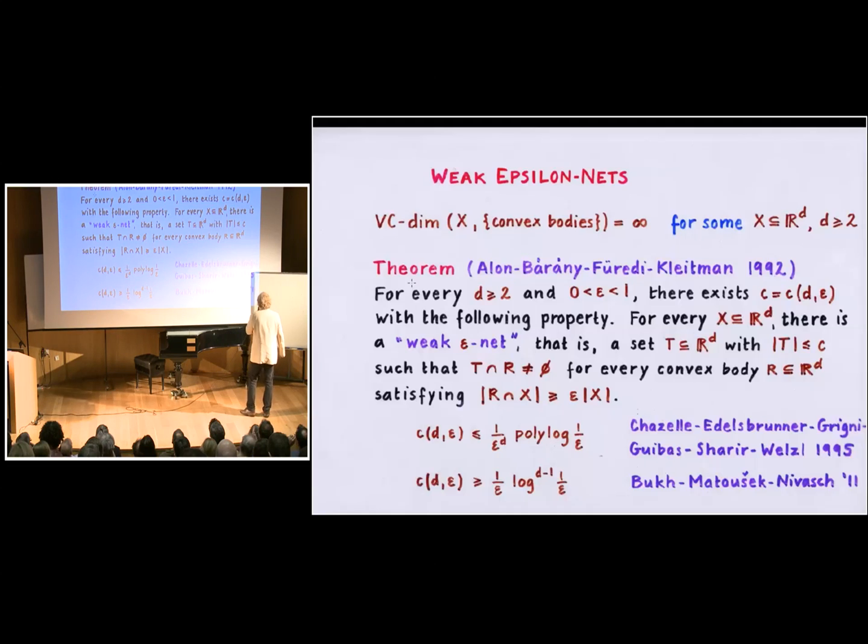So the slight change in the problem is that imagine that here is our point set, and we intersect this point set with all kinds of convex sets, and for the large convex sets that contain at least epsilon N elements, we want to find a transversal. We want to hit each of these large sets. If we are allowed to hit them in any point, not necessarily in points that belong to our original point set, then we say that we have a weak epsilon net. And indeed, such a weak epsilon net exists, and again, we have the same kind of problem as in the general situation, that most likely the size of this weak epsilon net is roughly around 1 over epsilon.